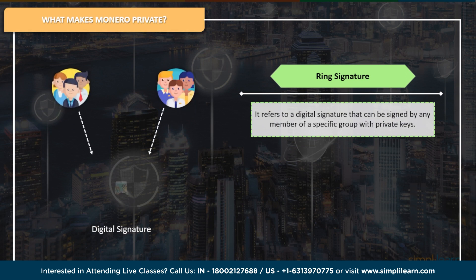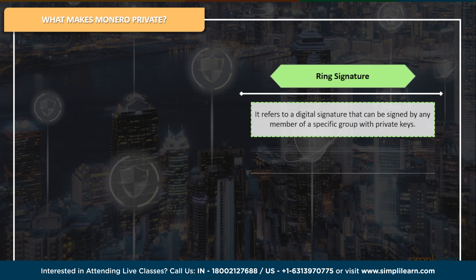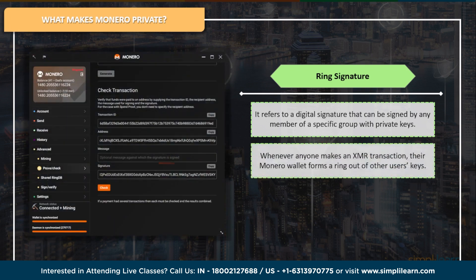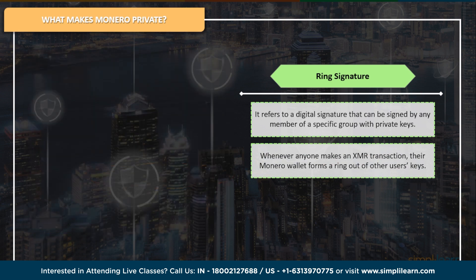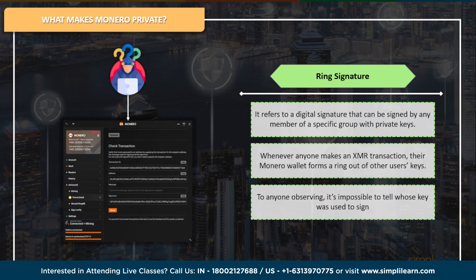Ring signatures are a cryptographic concept that pertains to digital signatures. It allows any member of a defined group of individuals with private keys to sign a digital signature. In Monero, when you initiate a transaction, your wallet selects a group of keys from the blockchain and forms a ring. As a result, it is impossible for an observer to determine which key was utilized to sign, providing anonymity to the transaction.